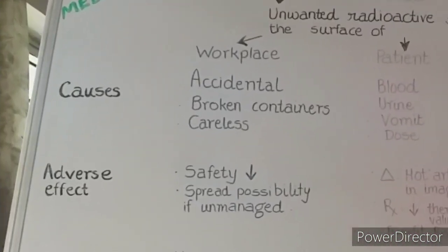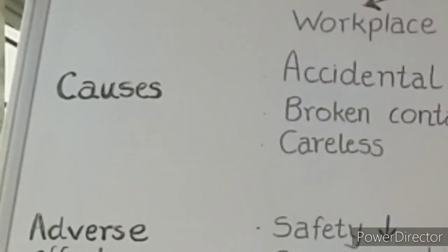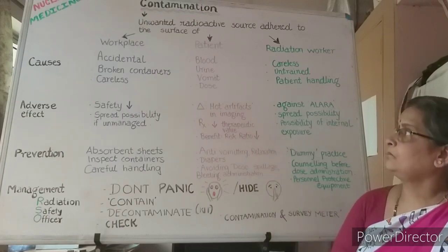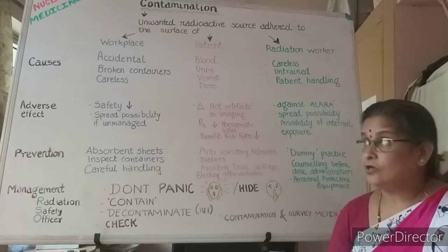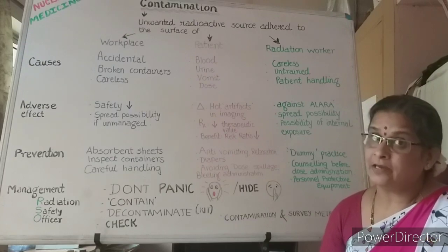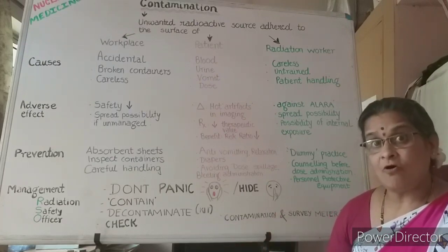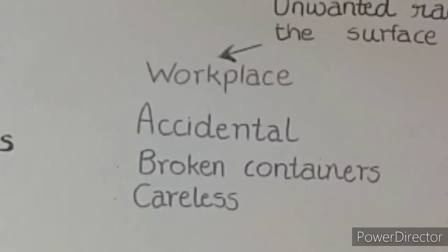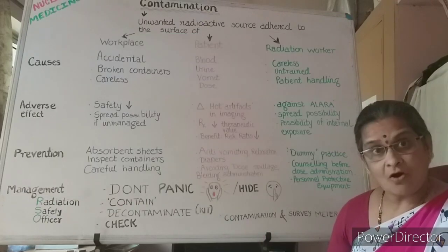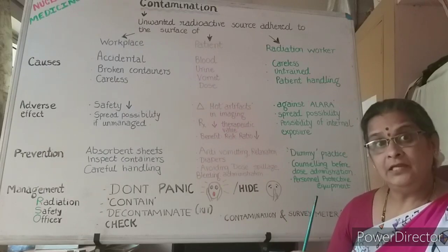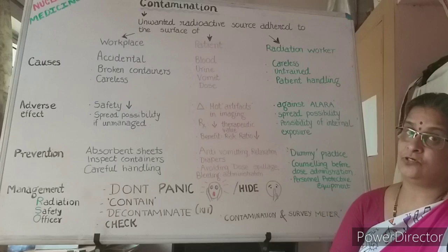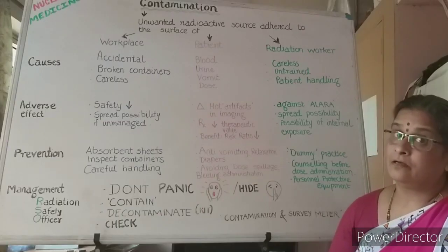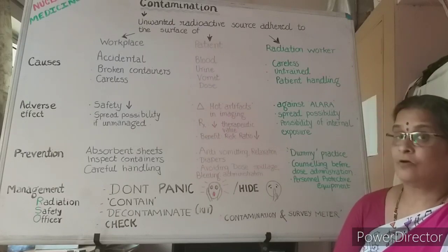On the basis of these three surface types, let me tell you the causes, adverse effects, prevention, and management of these contaminations. The workplace gets contaminated because of accidental spillage — it can be major or minor depending on the amount of activity. Broken containers and leaky containers like syringes not tightly fixed with the needle are also causes of workplace contamination. Careless handling of the radioactive source is also a very important cause.